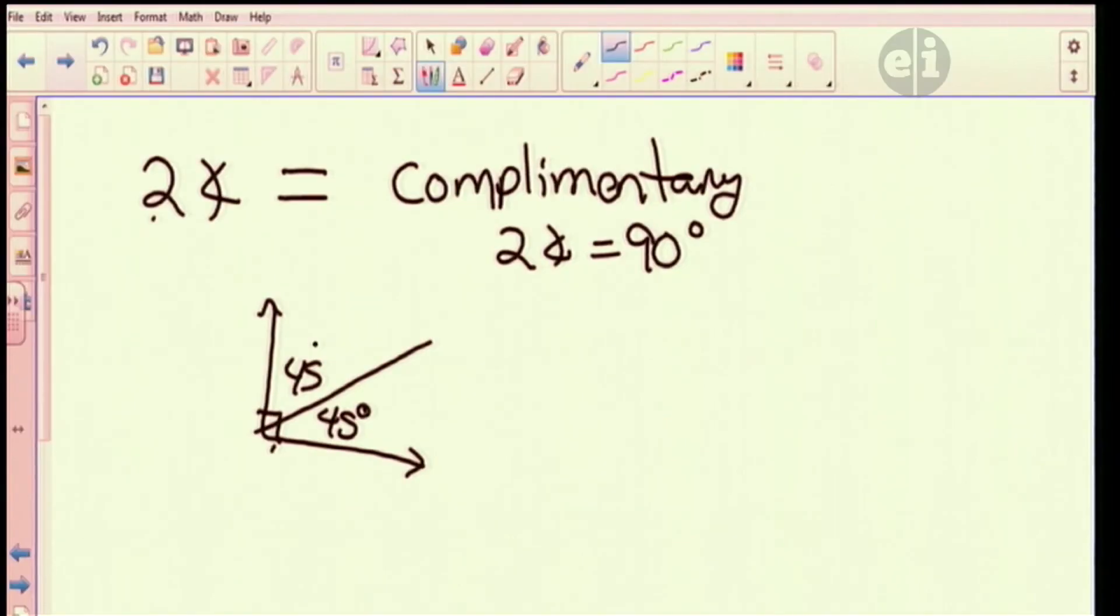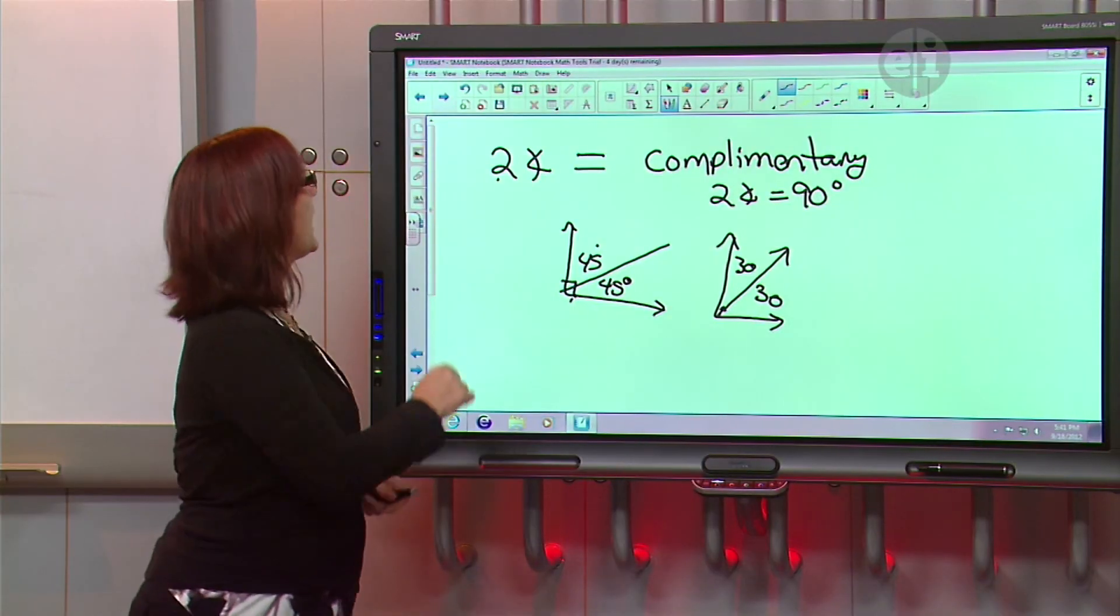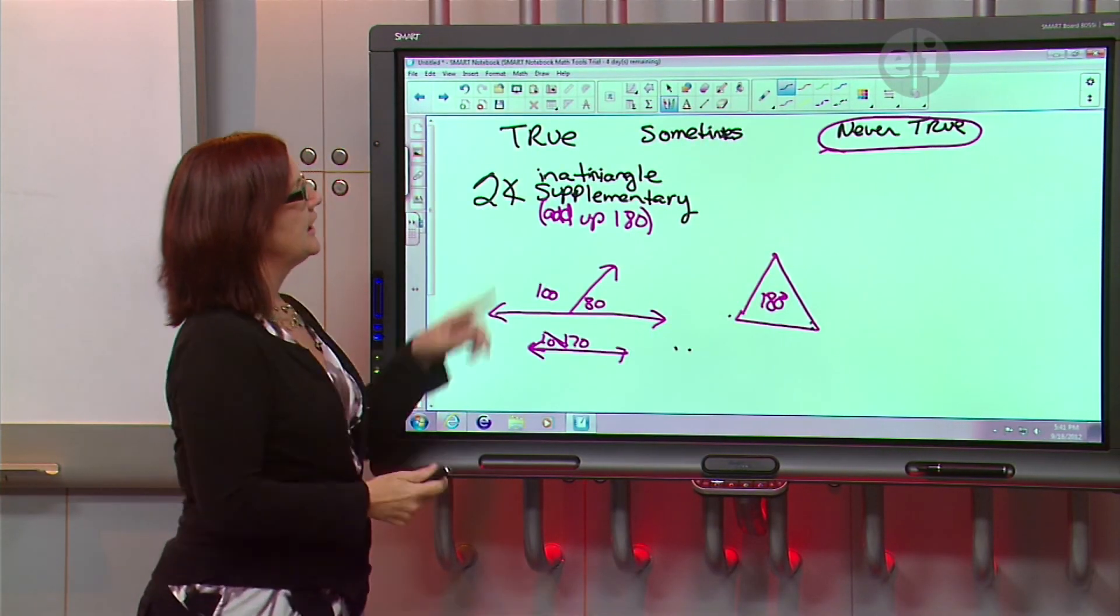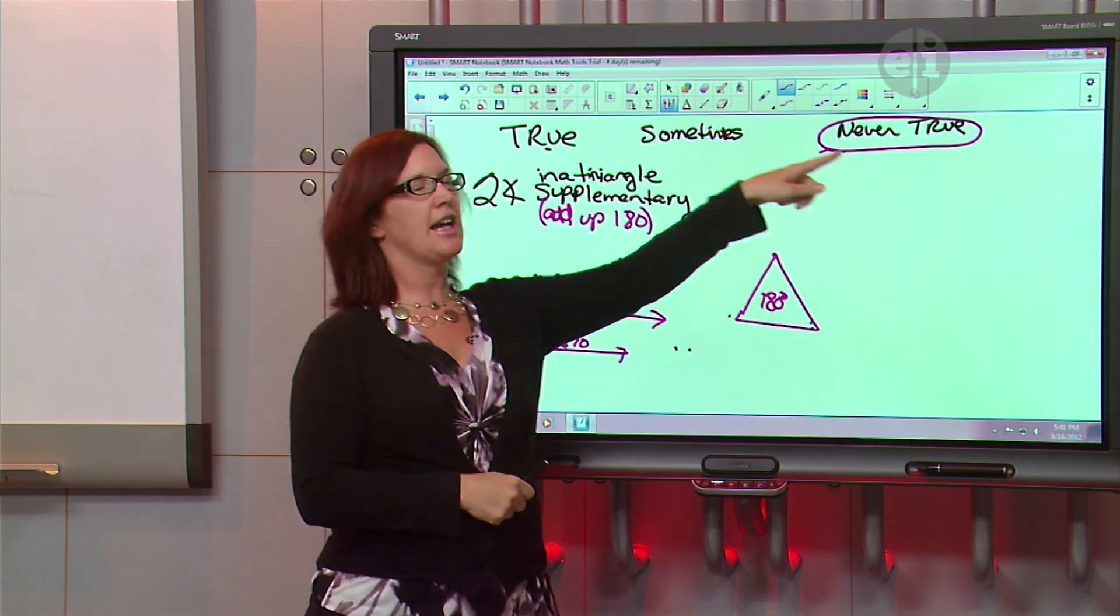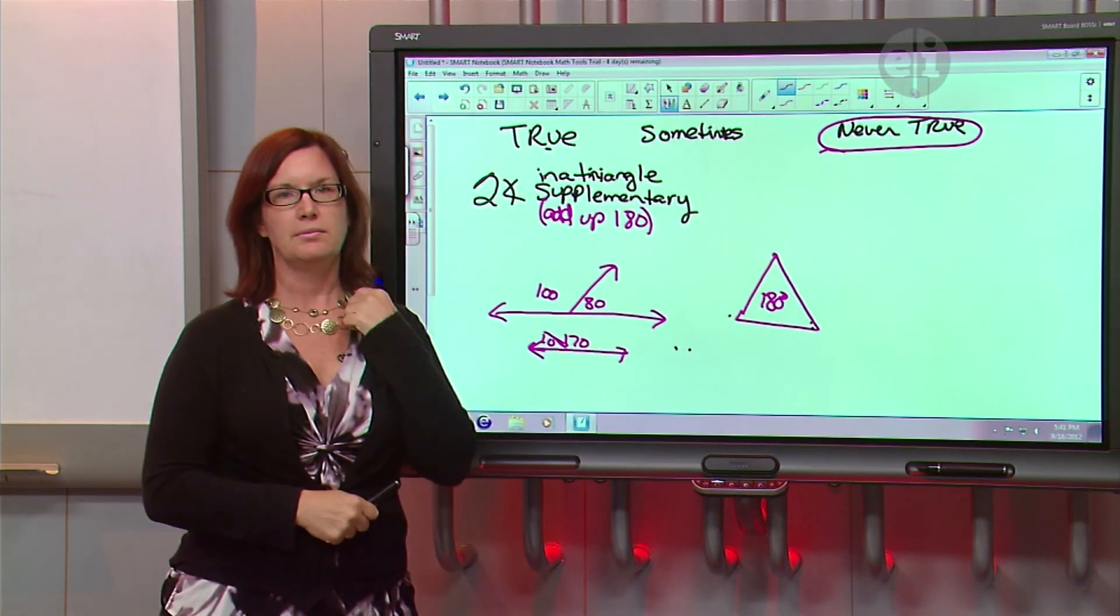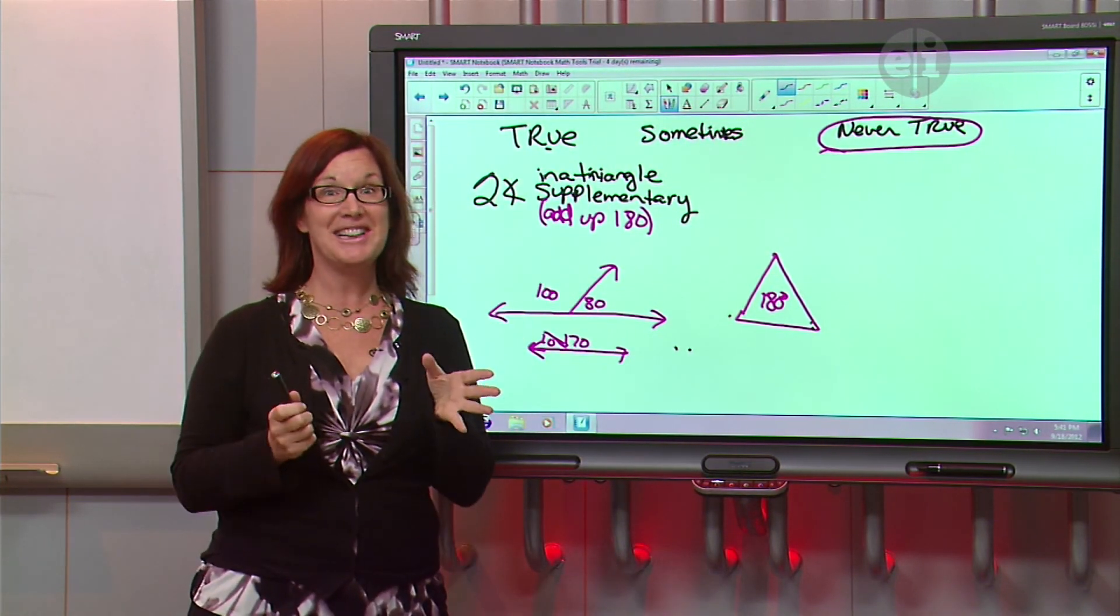But if I had another set of angles that were equal, and if I said that this one was 30 and this one is 30, are those guys equal? Yes. They are equal. Are they complementary? No. They are not complementary. So when we go back to look at our choices, is it true all the time, sometimes, or is it never true? Sometimes true. Sometimes it's true. You did a great job. That was a lot of thinking through that.